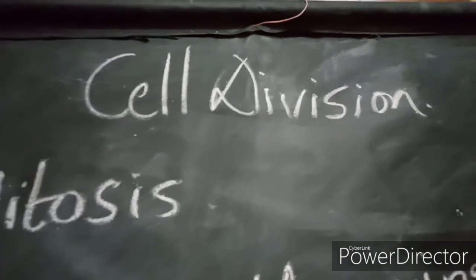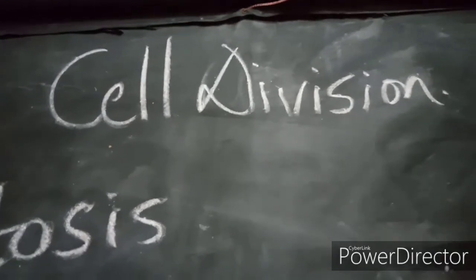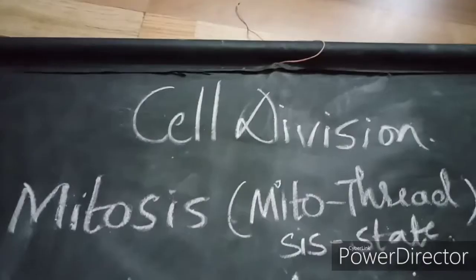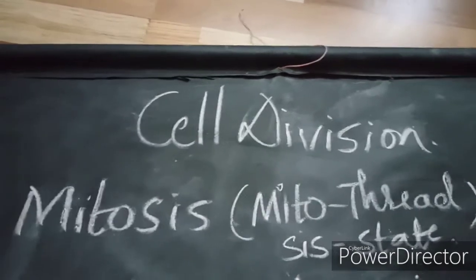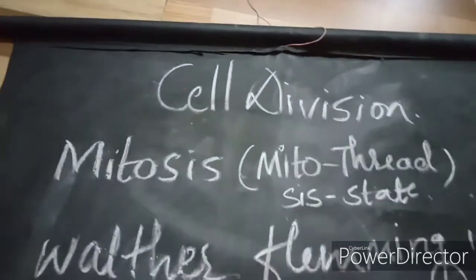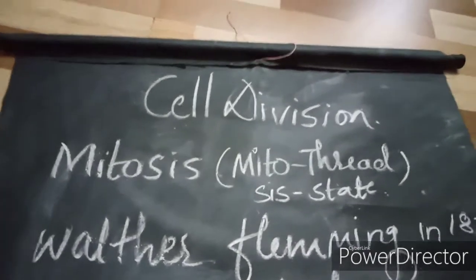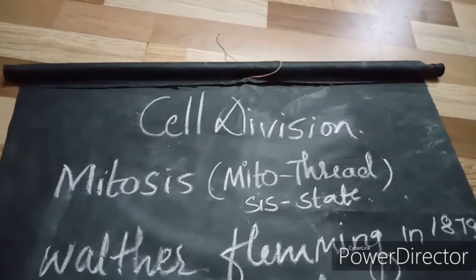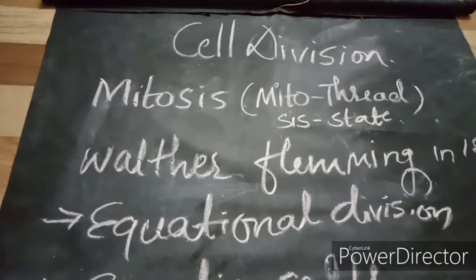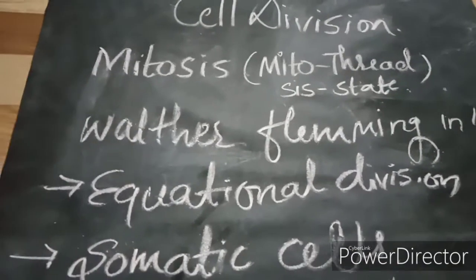Hello everyone, welcome back to my channel. Today we will study about cell division. Cell division is the most dramatic period of the cell cycle. It includes mitosis — 'mito' means thread and 'sis' means state, so mitosis means a thread state. Walther Flemming was the first person to show mitosis in an animal cell during the year 1879. Mitosis is also known as equational division since the number of chromosomes in the parent and the progeny cell is the same.